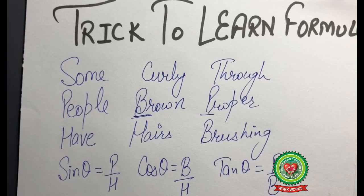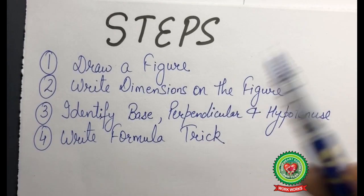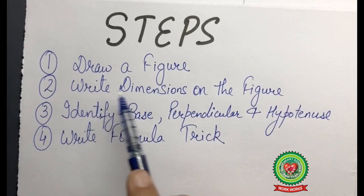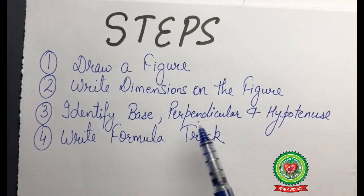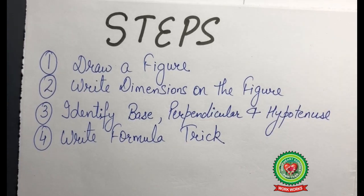Now let us discuss a sum based on finding all six trigonometrical ratios when all three sides of a right-angled triangle are given. Before that, let us discuss the steps for solving. Step one: draw a figure. Step two: write down the dimensions on the figure. Step three: identify base, perpendicular, and hypotenuse. Step four: write down the formula trick on one side — we will write this formula trick on every sum we solve.